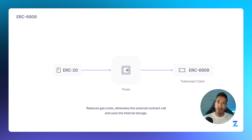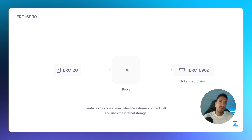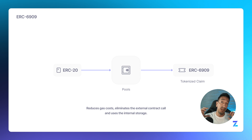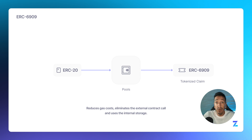So the next time you need to interact with a pool again, or if you want to redeem the tokens, you don't have to transfer the asset again. You just burn the ERC-6909 token that was minted in the previous step, avoiding that external contract call, using internal storage, and reducing the gas cost of the whole operation.